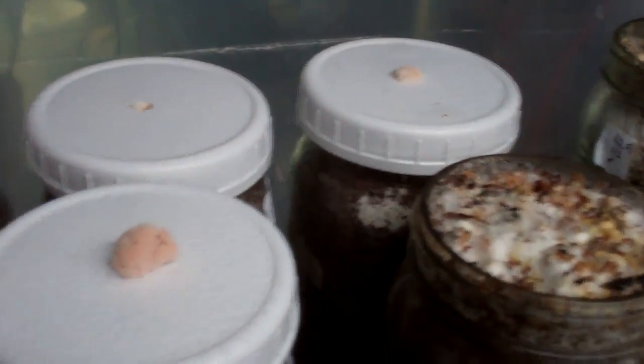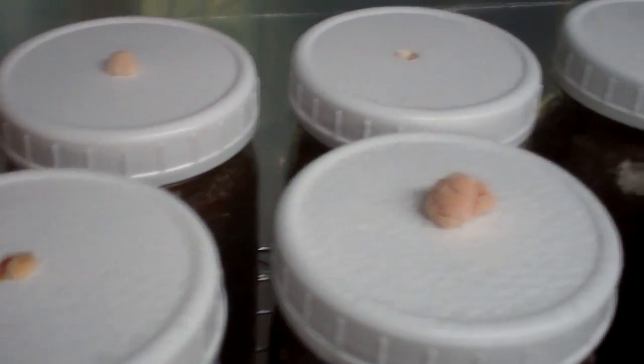This allows a very localized area to be exposed to the low carbon dioxide atmosphere, which triggers primordial formation, allowing a fruit to develop, and a single fruit will then grow out the hole on the top of the lid,